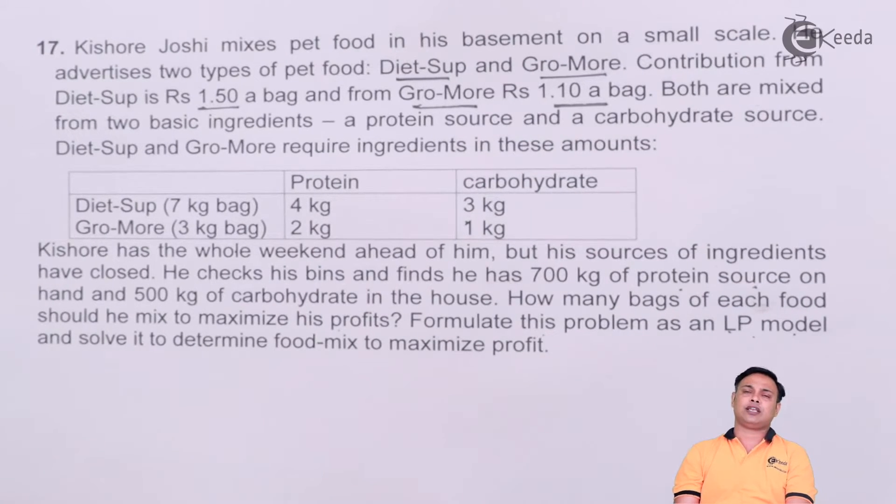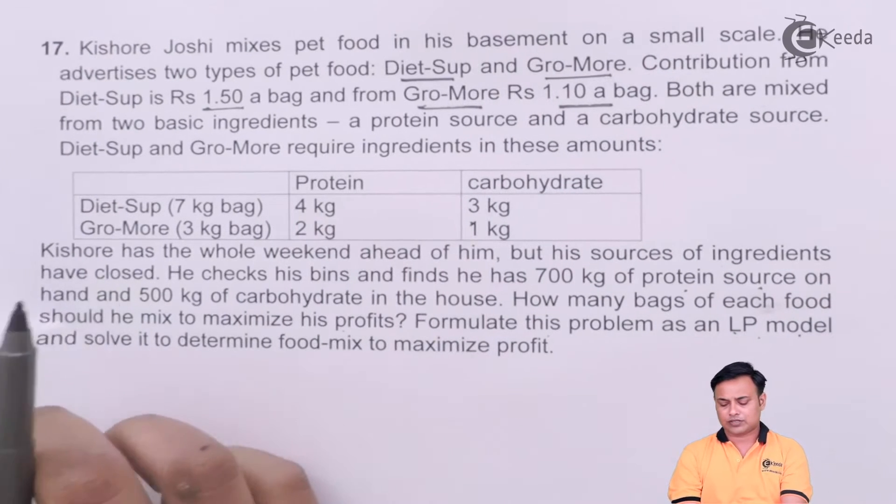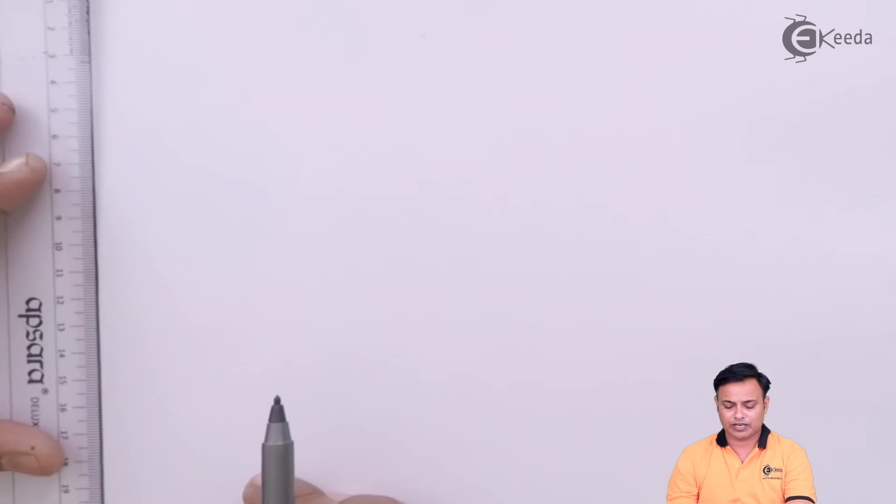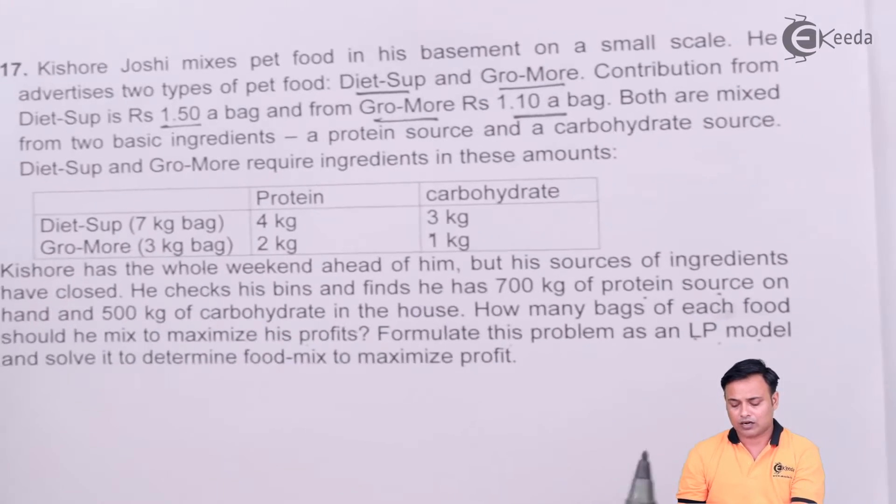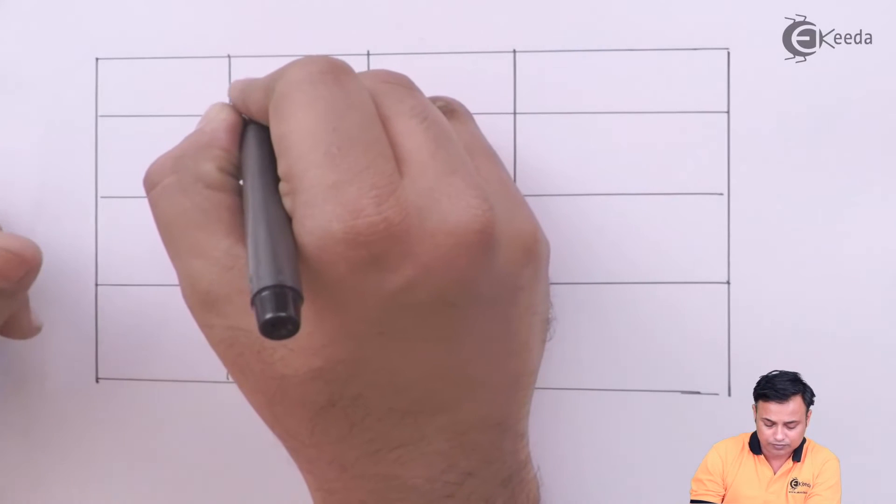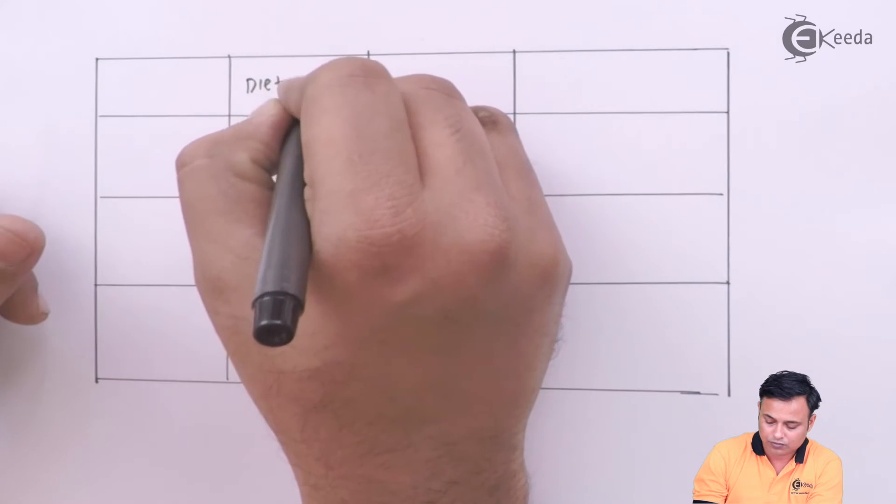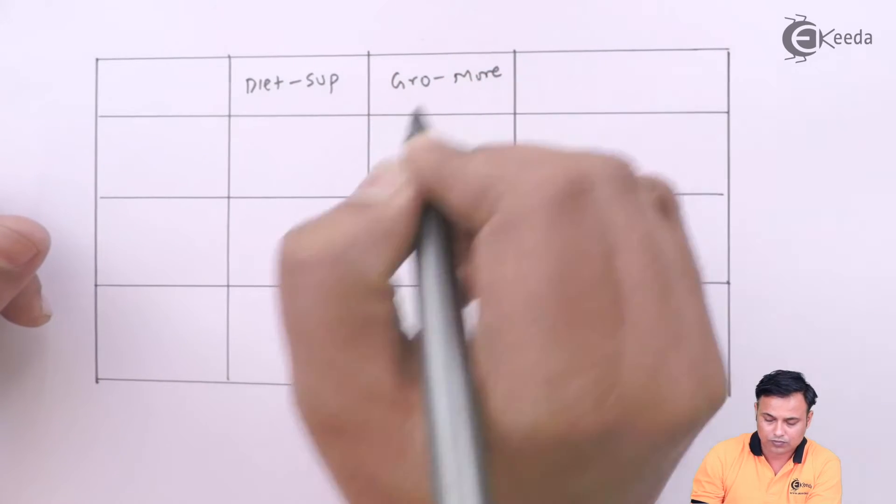So we need to formulate this as a linear programming problem with two different product mixes, one is Diet-Sup and one is Gro-More. We will first tabulate the table from the problem and then proceed further in the formulation. Let's tabulate this as a linear programming problem first. So my products are Diet-Sup and Gro-More. I will put down the products in the columns.